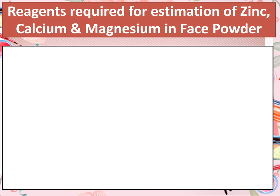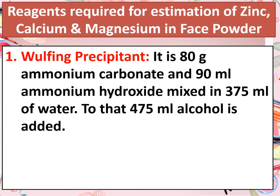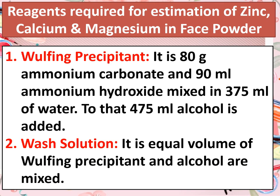Here we will see reagents required for estimation of zinc, calcium and magnesium in base powder. The first reagent is the pulping precipitant — 80 grams of ammonium carbonate and 90 ml ammonium hydroxide mixed in 375 ml of water, to which 475 ml of alcohol is added. The second reagent is the wash solution, which is equal volumes of pulping precipitant and alcohol mixed together.